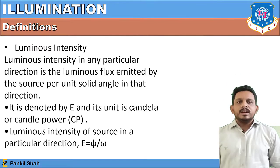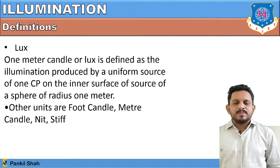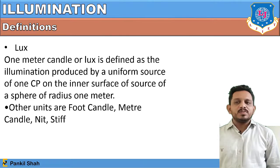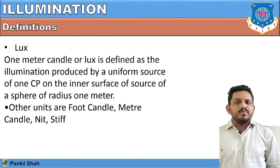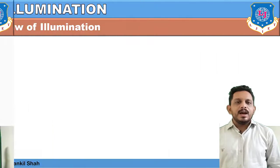One meter candle or lux is defined as the illumination produced by a uniform source of one candle power on the inner surface of a sphere of radius one meter. The units of lux include foot candle, meter candle, nit, and stib — all are units of lux.